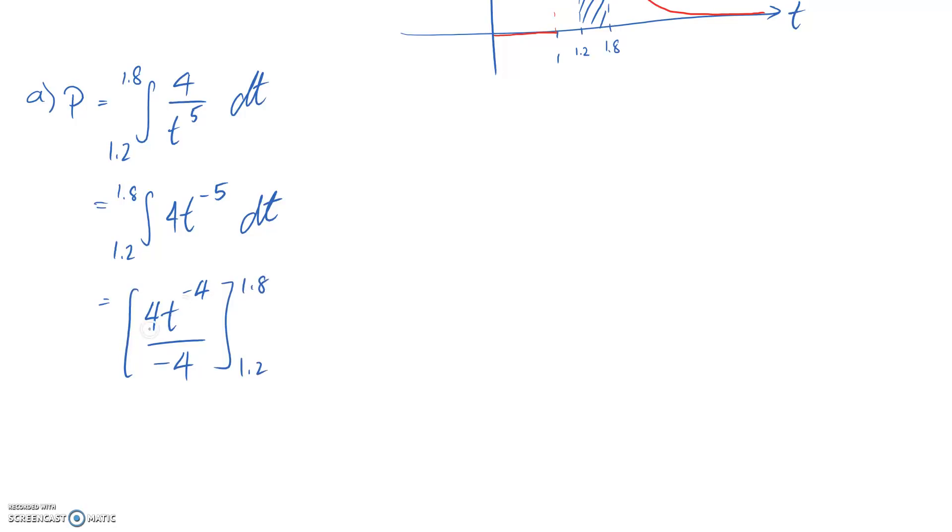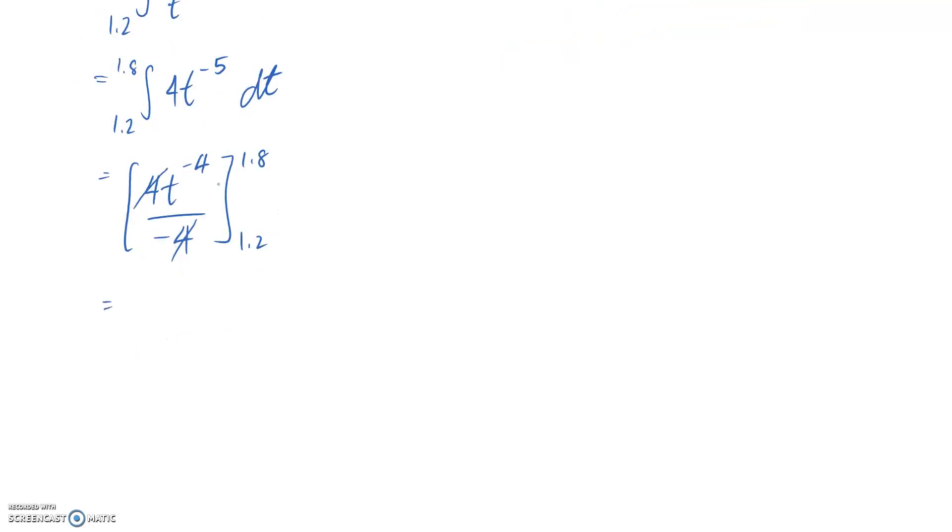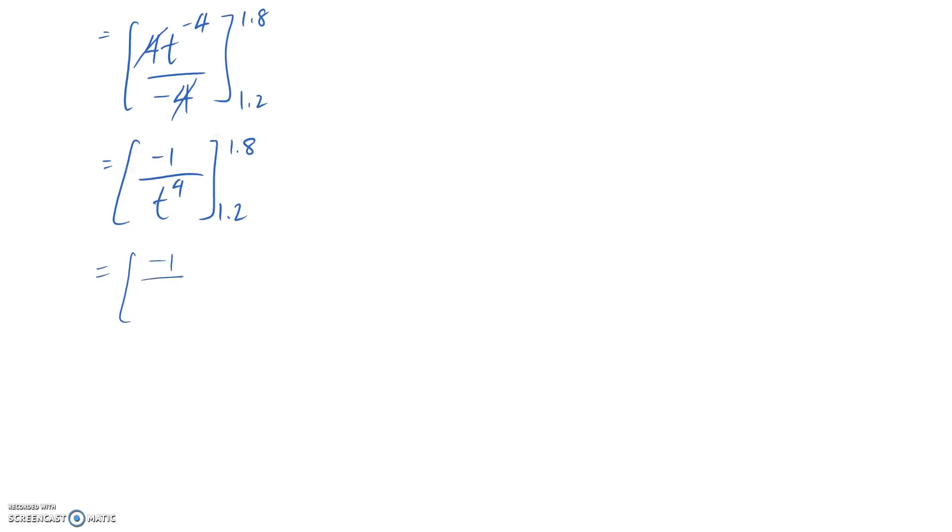Then we can rewrite this a little bit nicer. So it's like 4 divided by 4, so that's going to cancel out. And I can put this back on the bottom line if I want to make it positive. So essentially it's going to be negative 1, since we have the negative out the front, t to the power of 4. So if we now substitute our bounds into the equation, remember we start with the higher one first, and then we minus away the lower one.